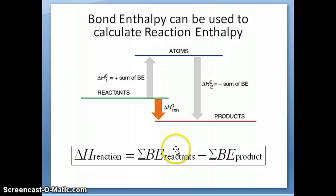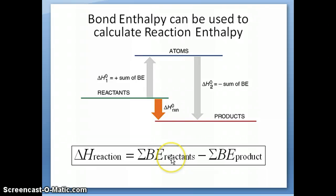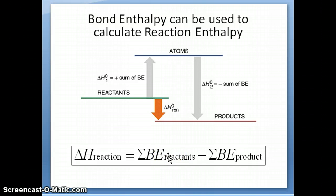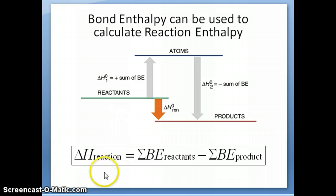That equation is what you need to calculate delta H of a reaction using bond enthalpy values. Note that this equation is slightly different from the one for delta H of formation, where we use the sum of products minus reactants. The reason is that formation enthalpy and bond enthalpy are defined in opposite directions — one is for breaking bonds, the other for forming them — which is why the symbols flip. You just need to remember which equation is appropriate in which situation. In the next video, I'll work through an example using an actual reaction.